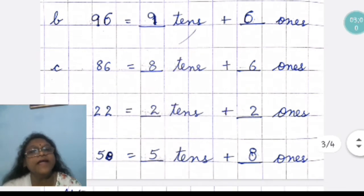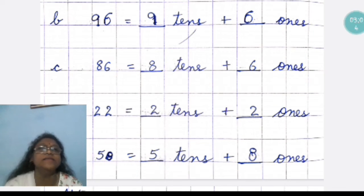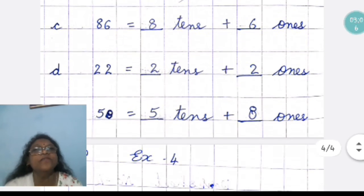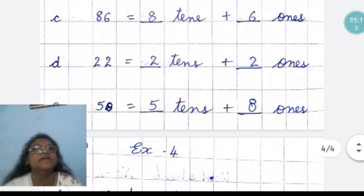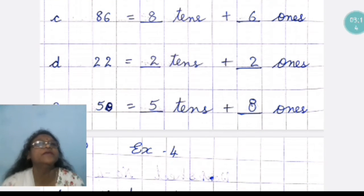Second number is 96. 6 is ones and 9 is tens. 6 is on the right side and 9 is on the left side. Now, 86. In this also, 6 is on the right side we will write. So, it is ones and left side, which number is there? 8. So, 8 will be on the left side.